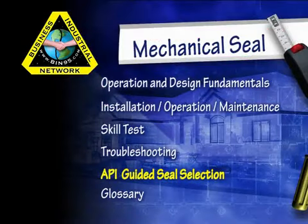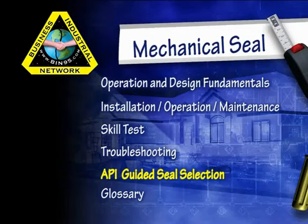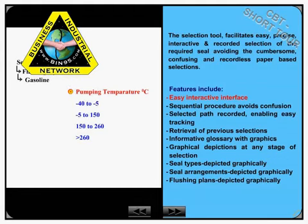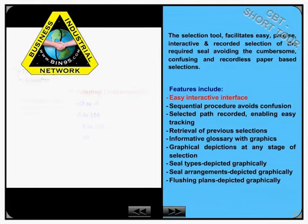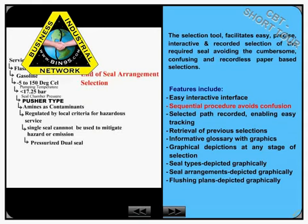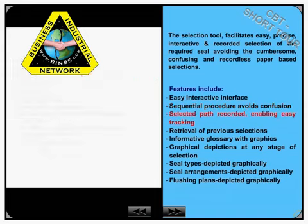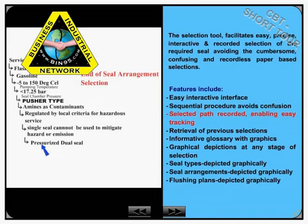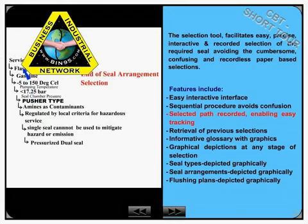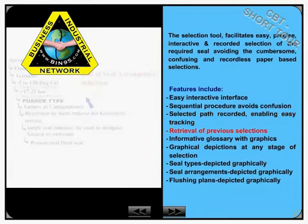The API682 guided seal selection tool serves as a valued assistant towards understanding and performing seal selection. The selection tool facilitates easy, precise, interactive, and recorded selection of the required seal, avoiding cumbersome, confusing, and recordless paper-based selections.